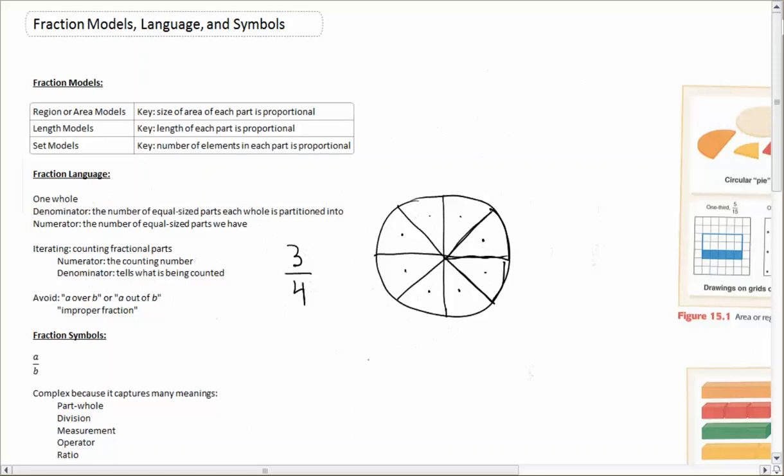Also avoid the word improper fraction. You might remember using that for things like 5 fourths and saying, ooh, that's improper. That tends to make kids think there's something wrong with that. There's nothing wrong with 5 fourths. It simply means we have 5 of these parts that are the size of a fourth each.